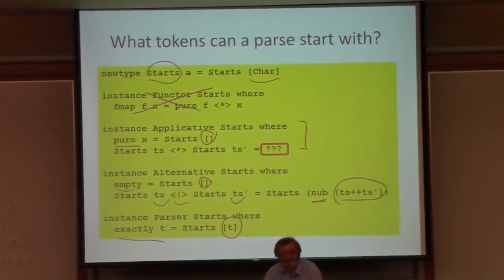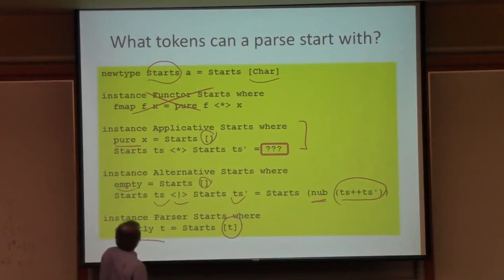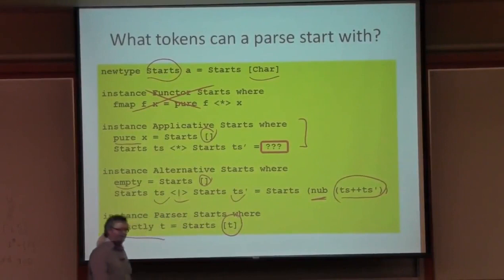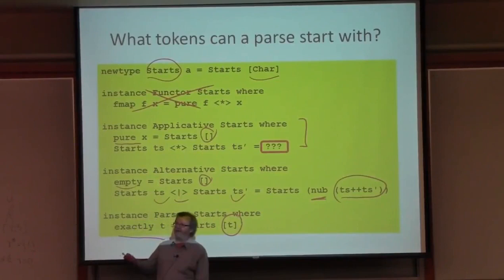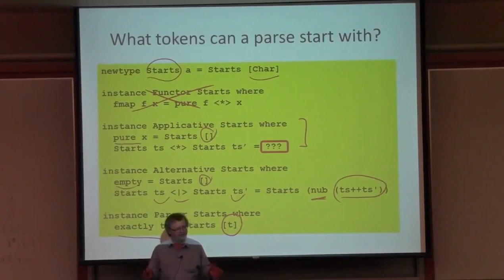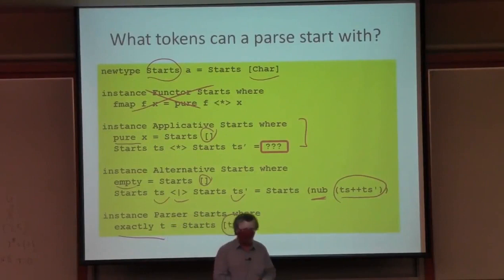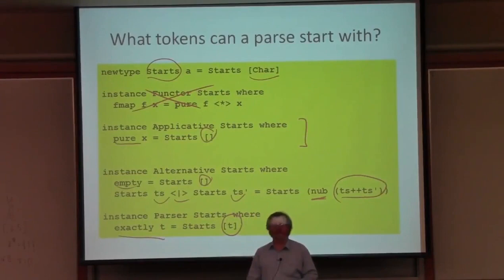Except for this clause — this is the clause that tells me what tokens an application can start with. Anything appearing in T's can start the result. But what about the things in T's prime? Well, if the first parser can match the empty string, then anything that can start the second can also start the combination. So I need to know here whether or not that first parser can match the empty string, and I don't. So let's just leave that out — I'll omit it. You can do that in Haskell. Of course, it doesn't work.